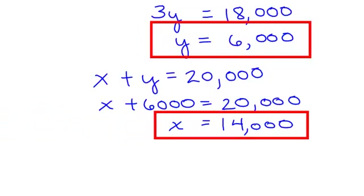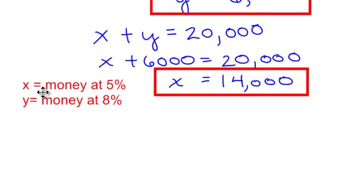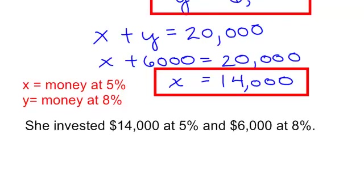I have both of my variables now. And remember, x was the money at 5% and y was the money she invested at 8%. So we now know she invested $14,000 at 5% and $6,000 at 8%.